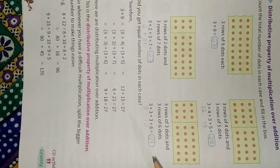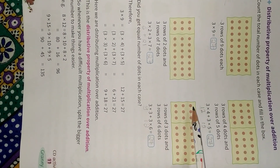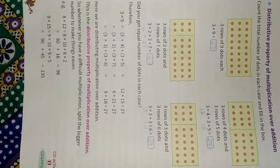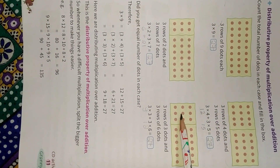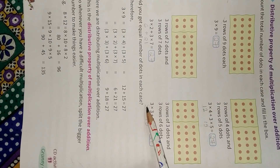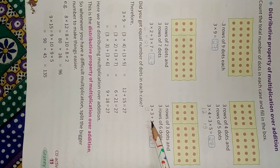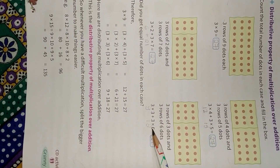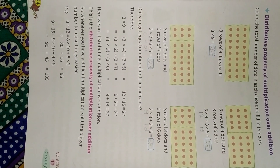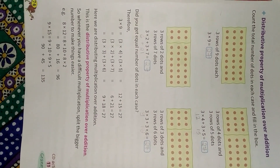In the third case, the first part contains three dots and the second part contains six dots in each row. So the number of dots in the first part is 3 into 3 = 9, and in the second part 3 into 6 = 18. And 9 plus 18 equals 27. So in each case we get the same total number of dots.